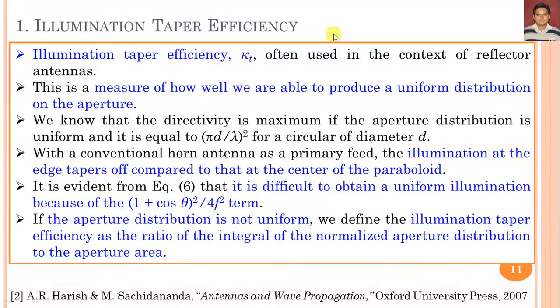There are several important efficiency parameters that affect the aperture efficiency of the prime focus paraboloid reflector, and hence also the directivity, gain, and other parameters. The first is illumination taper efficiency, represented by κ_T, which measures how well we are able to produce a uniform distribution on the aperture. The directivity is maximum when the aperture illumination is uniform, equal to (πD/λ)² for a circular aperture of diameter D.